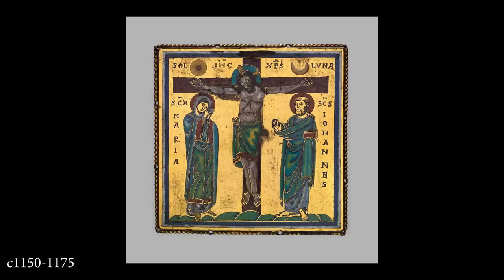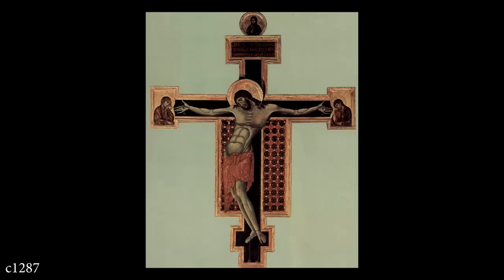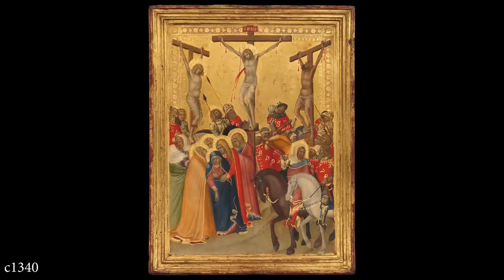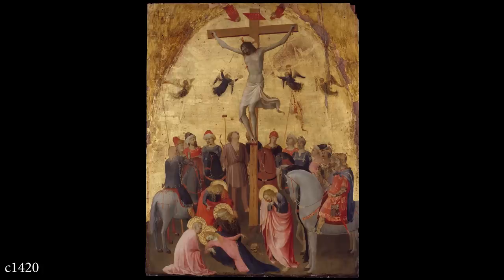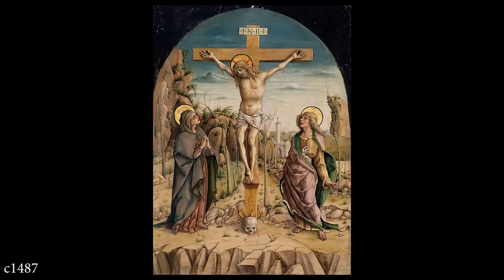As we travel through time and look at different examples, we can see how this common image changes over the centuries. How realistic or how simplistic are the individual figures drawn? What proportions are emphasized? How do they draw faces? What are the people wearing? How is dimensional perspective handled? What elements are emphasized?